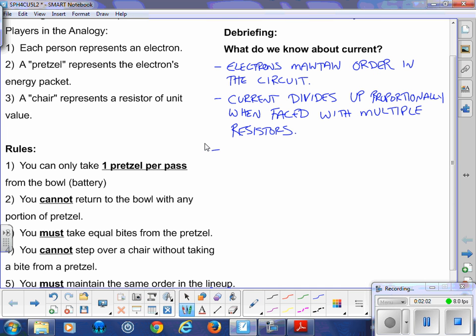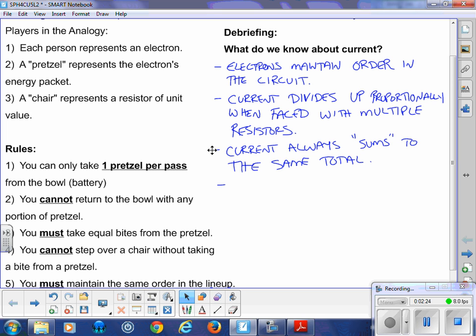Another point is that current always sums to the same total. So no matter where you are in the circuit, the total amount of current hasn't changed. If we add up our current for the multiple paths, it's always consistent throughout the entire circuit.